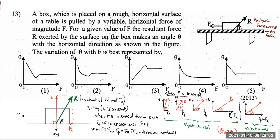So the value of theta should reduce, and then there must be a small bump when the object starts to move — because friction drops slightly and then remains constant. Looking at the answer options: the one where theta is increasing is definitely wrong. Options where theta reduces but the bump is missing are also wrong. That bump is important — until the object moves, friction keeps increasing; after it moves, friction slightly reduces. So the answer is either the first or second option. Also, theta will not vary linearly with F — it is non-linear.